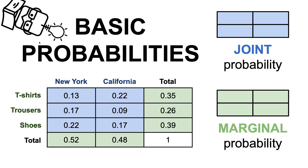Hey everyone! In this video, I would like to get to the basics of probability and talk about several fundamental concepts in this field. Namely, I will try to explain what is a marginal probability, what is a joint probability, and what is a conditional probability, and also the relationship between them.